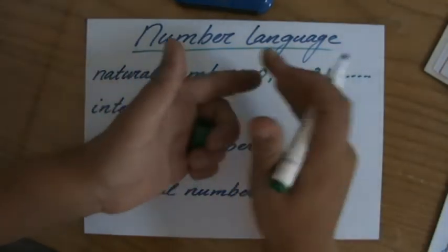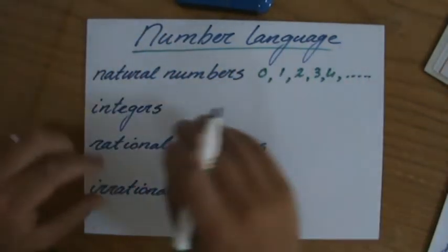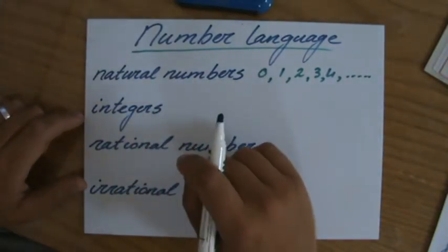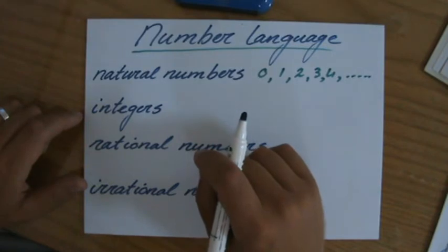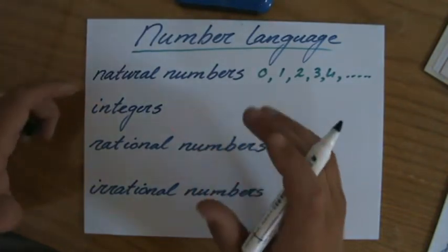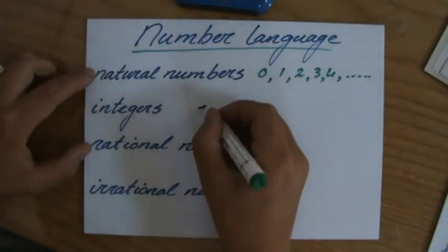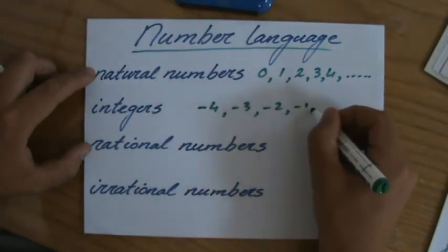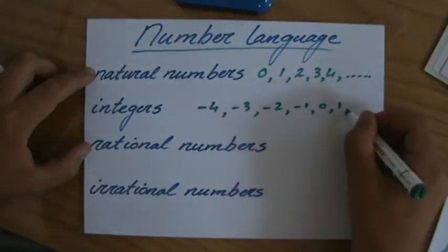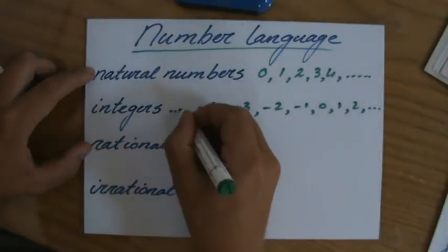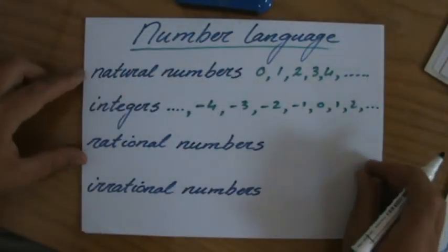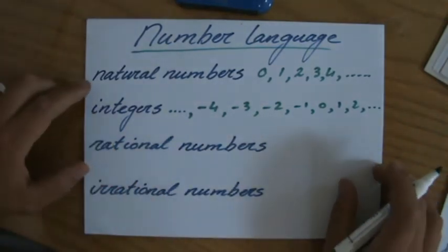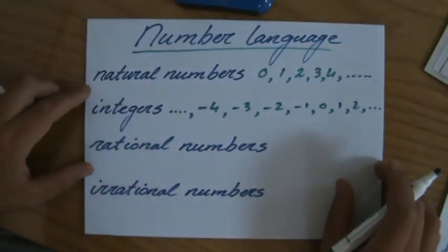Integers are almost the same but include the negative numbers. For instance, in Holland it can get quite cold during the winter — it can be minus four degrees, or minus three, minus two, minus one, zero, one, two, and you can go on and on on both sides. Those are integers: negative and positive whole numbers, with zero in the middle.